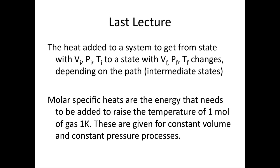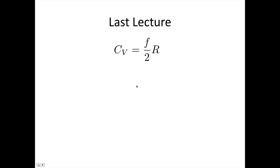We saw that there are molar-specific heats for gases, and that molar-specific heat is the energy that needs to be added to raise the temperature of one mole of gas by one Kelvin. These are given for constant volume and constant pressure processes. We derived the expression that the molar-specific heat at constant volume is equal to F over 2R, where F is the number of degrees of freedom. The molar-specific heat at constant pressure is related through Cp minus Cv equals R. These formulas are given on the formula sheet.